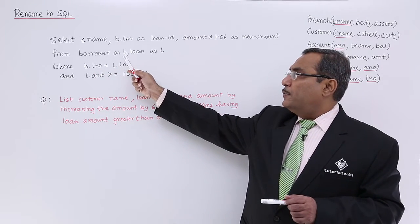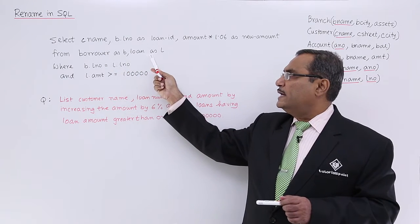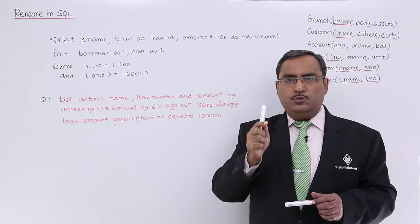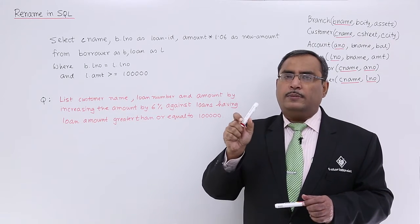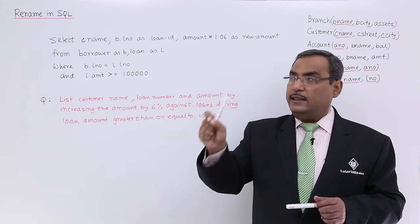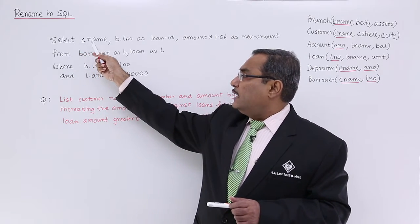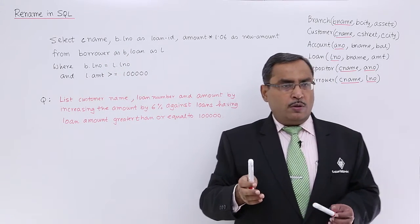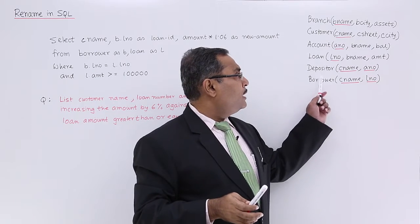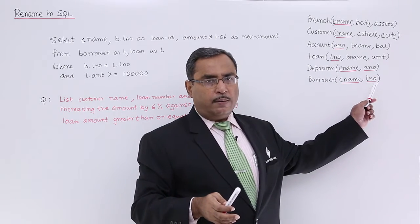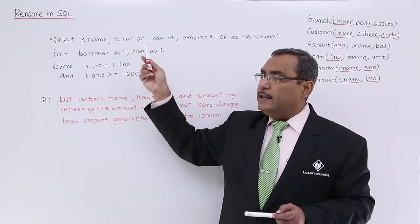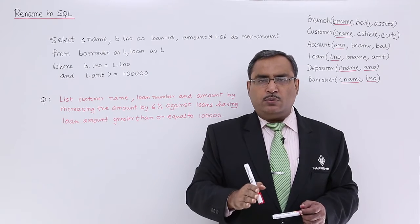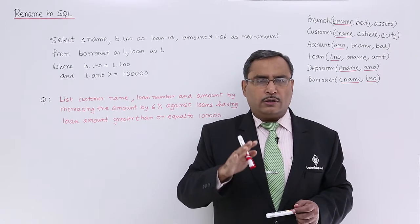Here we are having rename operation. Borrower has been renamed as B and loan has been renamed as L. In the rest of the queries, wherever I will be requiring to use the borrower, I will be writing B and whenever I shall be using loan, I shall be writing L. Select customer name, CNAME from B dot LNO. Why you are doing this B dot LNO? Because we know that in between borrower and loan, the loan ID is common, the loan number is common. If you write LNO, that will create one ambiguity. I must be mentioning explicitly whether it is L dot LNO or B dot LNO.